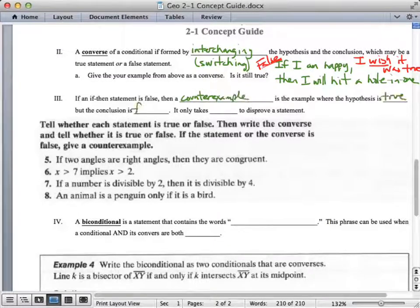If the statement is false, then a counterexample is the example where the hypothesis is true, but the conclusion is false. So, a counterexample is the next term that you absolutely will need to know with this. When we talk, this is called a nuh-uh statement. So, if I'd said, if I am happy, then I hit a hole-in-one, you might say, nuh-uh, you were happy the other day, and you didn't hit a hole-in-one. So, we'll come up with plenty more examples here as we go.